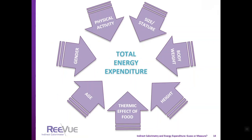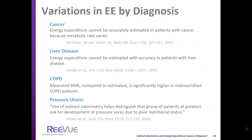For a normal individual, if you gain weight, you either need to decrease calories or increase physical activity. If you're losing weight, you need to increase energy expenditure. The challenge comes when this is replaced by disease or injury — we must then account for the potential increase or decrease in energy expenditure due to that illness or injury.